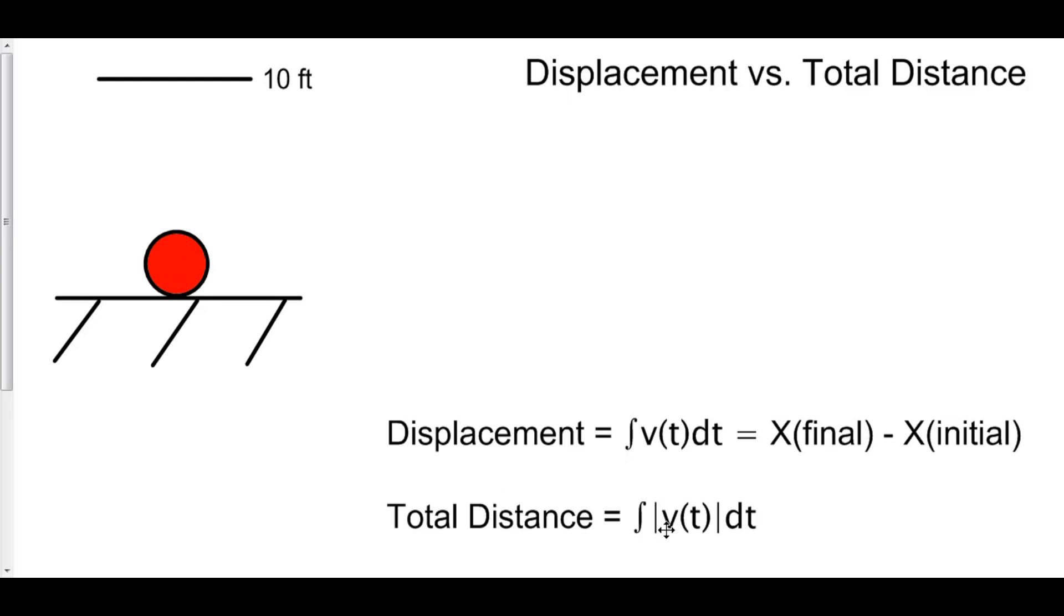However, the total distance, we're going to forget about direction altogether. This ball went up ten feet and it went back down ten more feet. And therefore, its total distance is twenty feet.